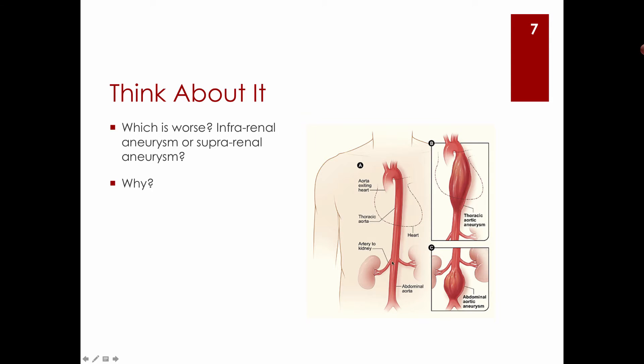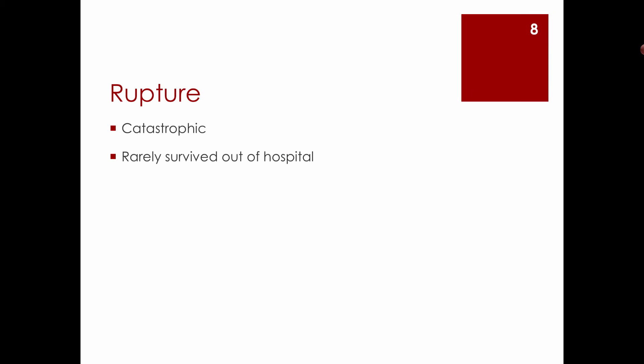A supra-renal aneurysm could dissect downward and disrupt blood flow to the kidneys. One of the things that can happen with any aneurysm is rupture — usually catastrophic. The arterial wall balloons, begins leaking, and ruptures. There's massive blood loss and the patient can bleed out within a minute or so — not much can be done.